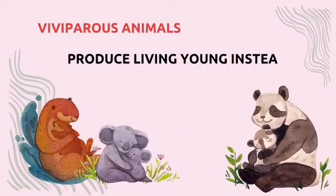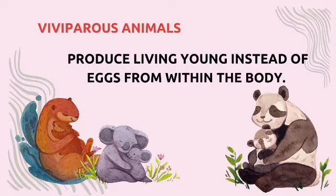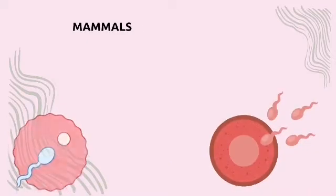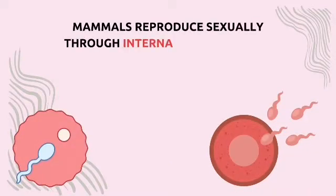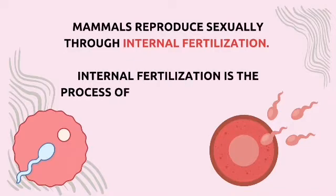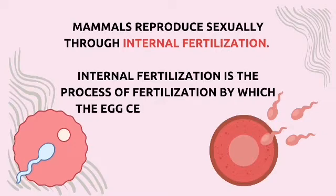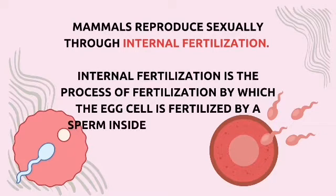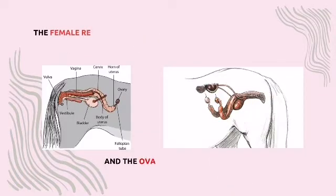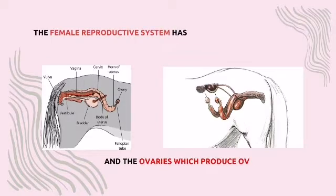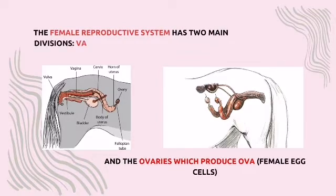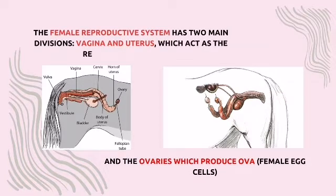Viviparous animals produce living young instead of eggs from within the body. Mammals reproduce sexually through internal fertilization. Internal fertilization is a process by which the egg cell is fertilized by a sperm inside the female's body. The female reproductive system has two main divisions: vagina and uterus, which act as the receiver of the sperm, and the ovaries, which produce ova, or female egg cells.